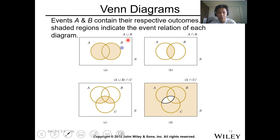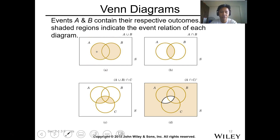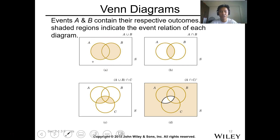This one is a union, where the orange part contains the elements of events A and B. When we say the union of A and B, the orange part represents the elements present in that union.